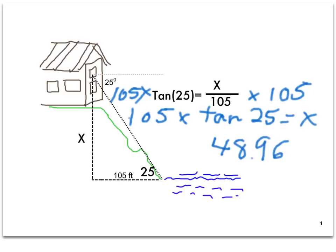And when I punch that into my calculator, I get 48.96. So the distance up to the second window of the cabin is approximately 49 feet.